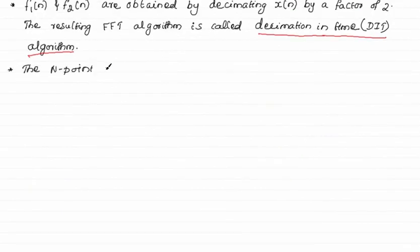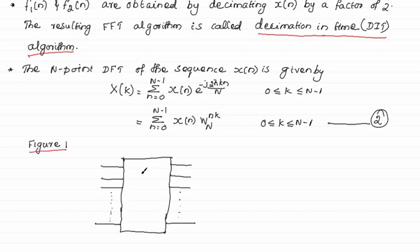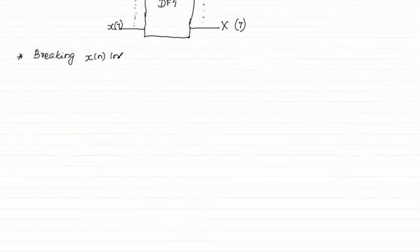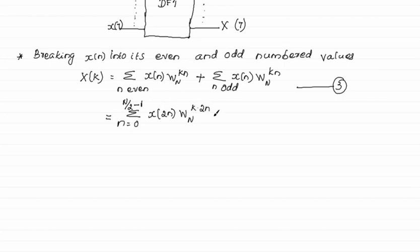We know the N-point DFT of the sequence x[n] is given by X[k]. We can also represent the DFT equation with the twiddle factor. An 8-point DFT can be represented as a block with input x[0] to x[7] and output X[0] to X[7]. Now we break x[n] into even and odd numbered values. Here we change the upper limit from N-1 to N/2-1 since we have broken x[n] into odd and even. We replace n with 2n for even values and n with 2n+1 for odd values.